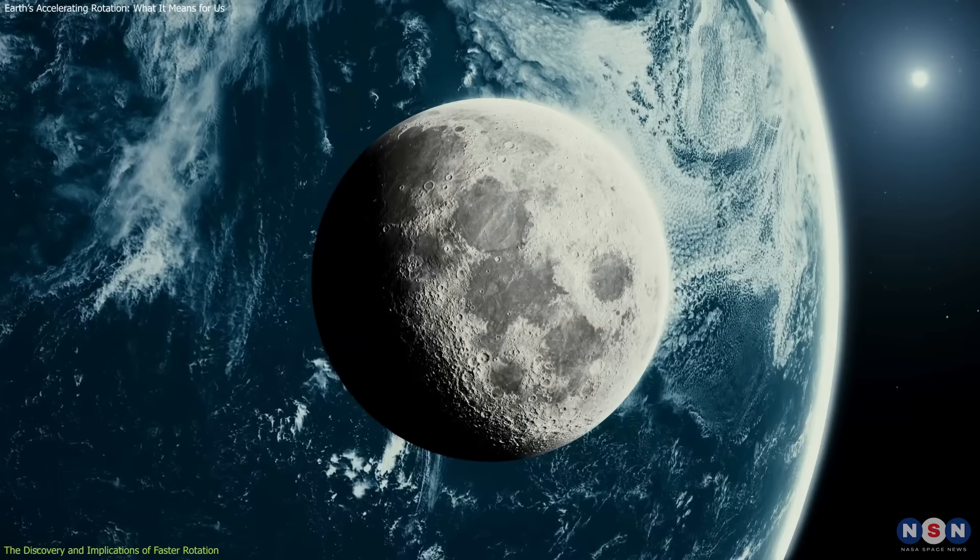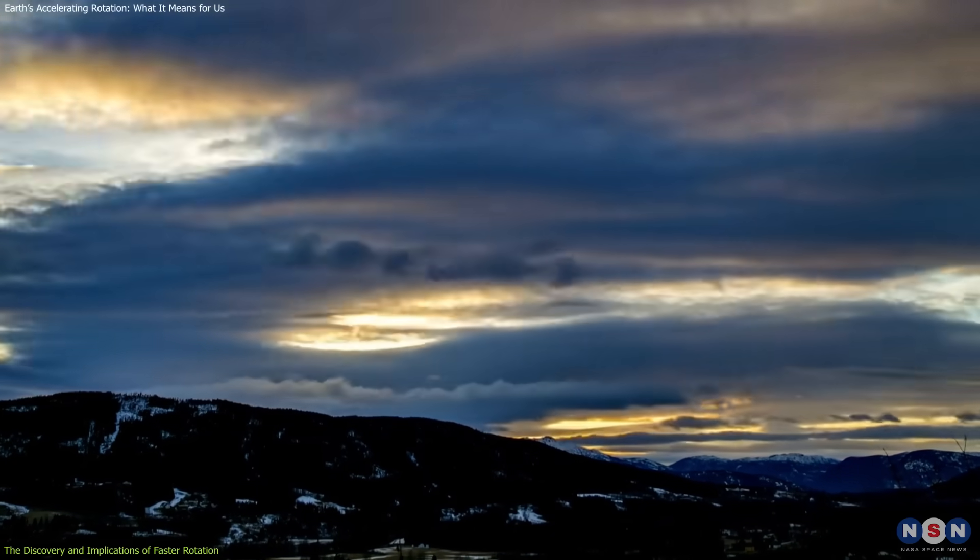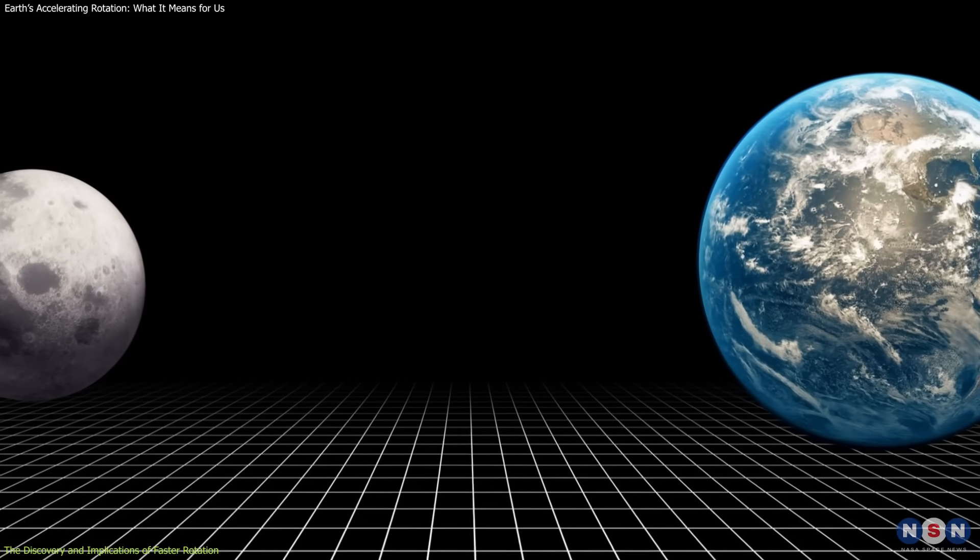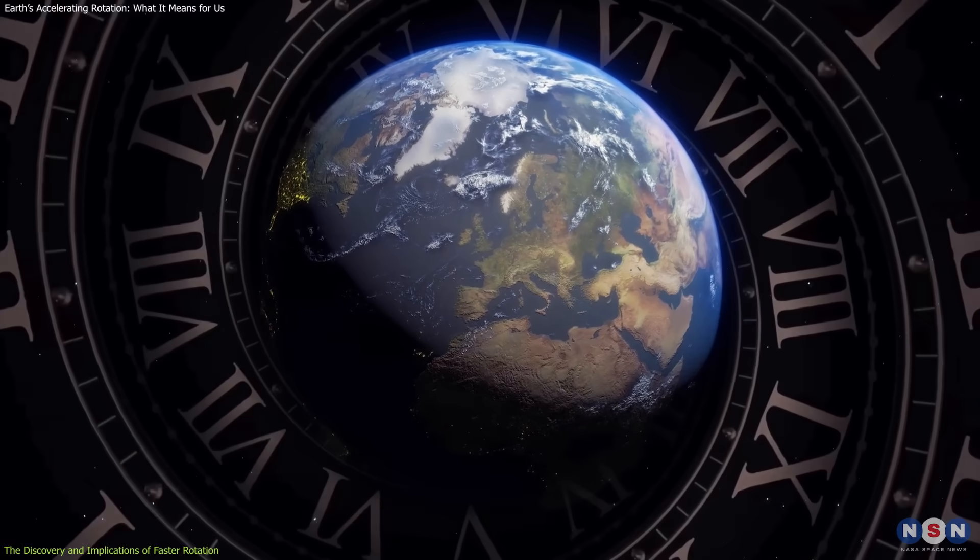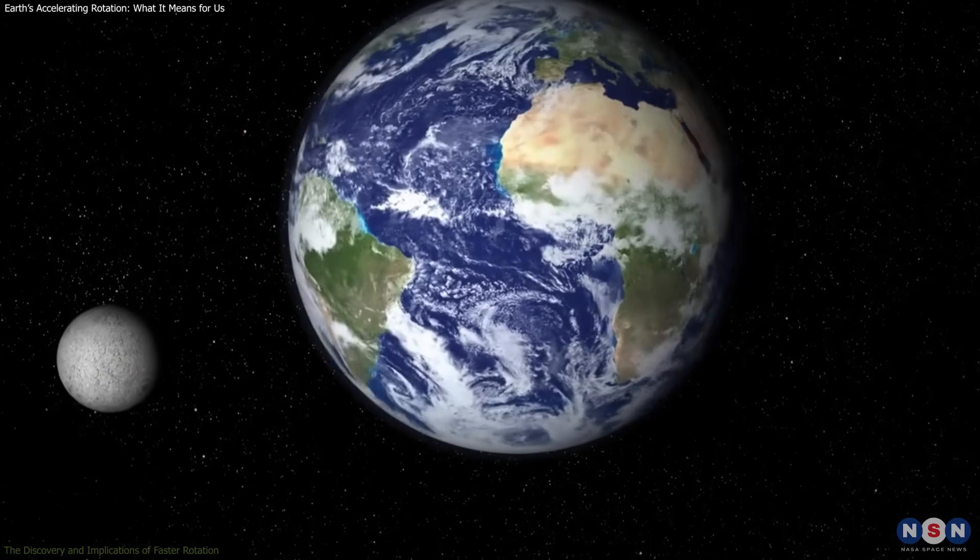This relationship between the Earth and the moon has been at play for billions of years. In the distant past, when the moon was much closer to Earth, a day on Earth lasted only about 19 hours. As the moon moved away over time, Earth's rotation slowed, resulting in the 24-hour cycle we experience today. The recent acceleration suggests that some of the factors influencing Earth's spin are changing in ways that weren't predicted.